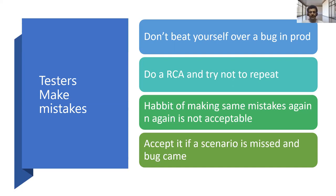The better thing would be to do a root cause analysis — why it came, how it got missed. It can be missed in unit testing as well, so it's not about blaming the developer for missing it in unit testing, but it should not be repeated. Avoid the habit of making the same mistakes. If you're given a task and you are making the same mistake, that is not acceptable.